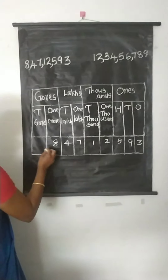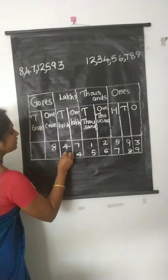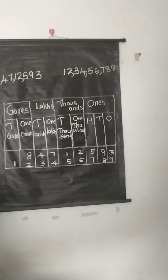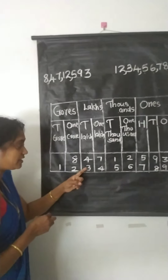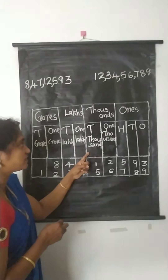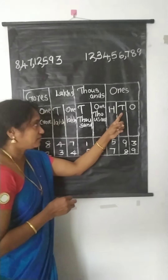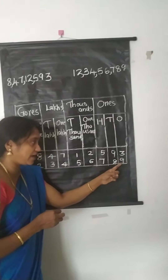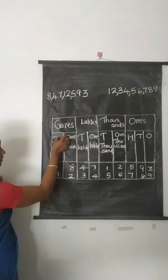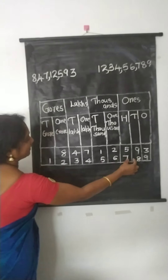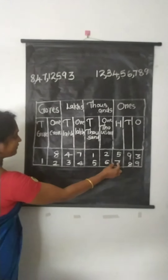Again, we can write the number 123456789 in the place value box. The 10 crores place digit is 1, crores place is 2, 10 lakhs place is 3, lakhs place is 4, 10,000s place is 5, 1,000s place is 6, 100s place is 7, 10s place is 8, and 1s place is 9. So this number is read as 12 crores, 34 lakhs, 56,789.